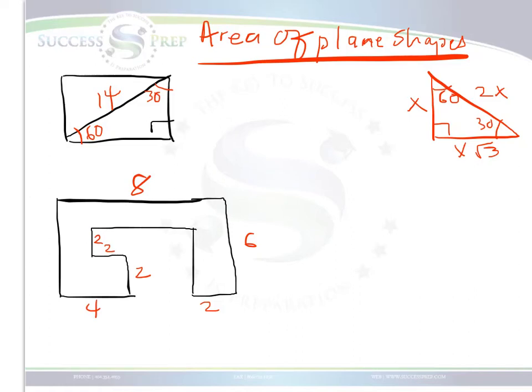To find the area of these two plane shapes, let's focus on this first one. This plane shape is pretty much a rectangle, but it's made up of two triangle pieces.